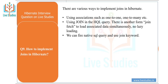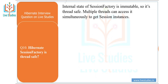Another question: how to implement joins in Hibernate? There are various ways to implement joins in Hibernate — using associations such as one-to-one, one-to-many, many-to-one, and many-to-many; using join in an HQL query; and using join fetch to load associated data simultaneously without lazy loading. We can also fire a native SQL query and use the JOIN keyword.